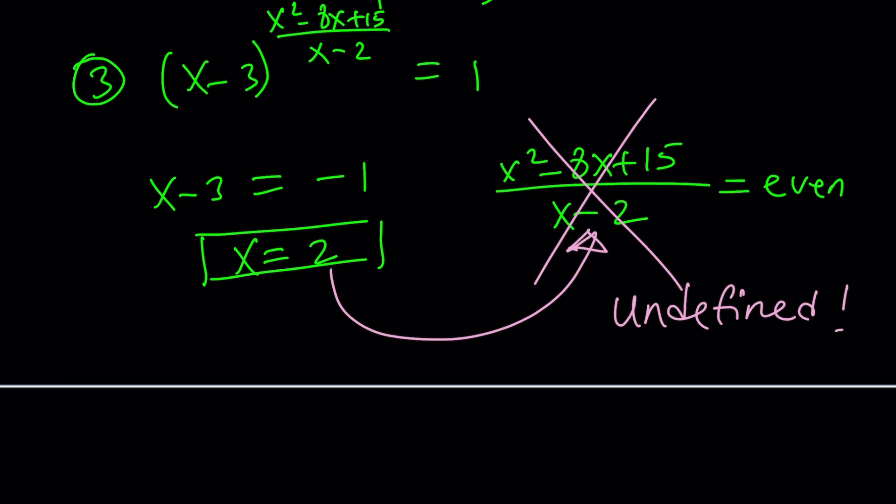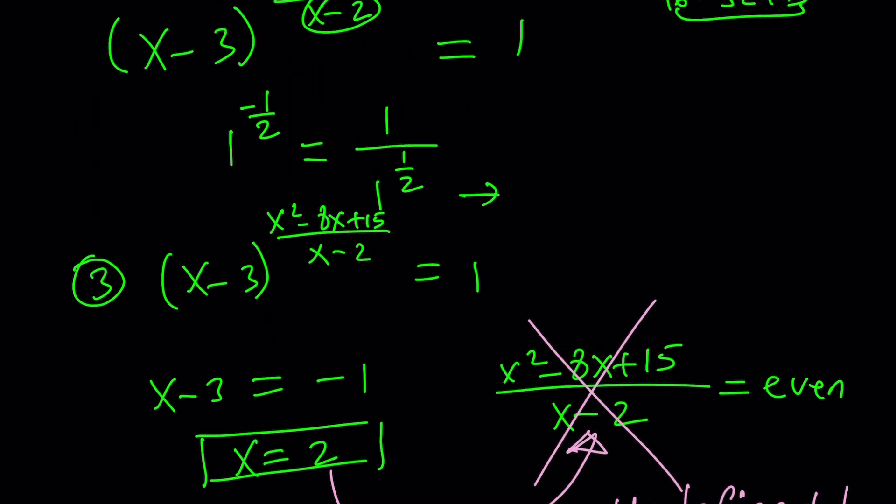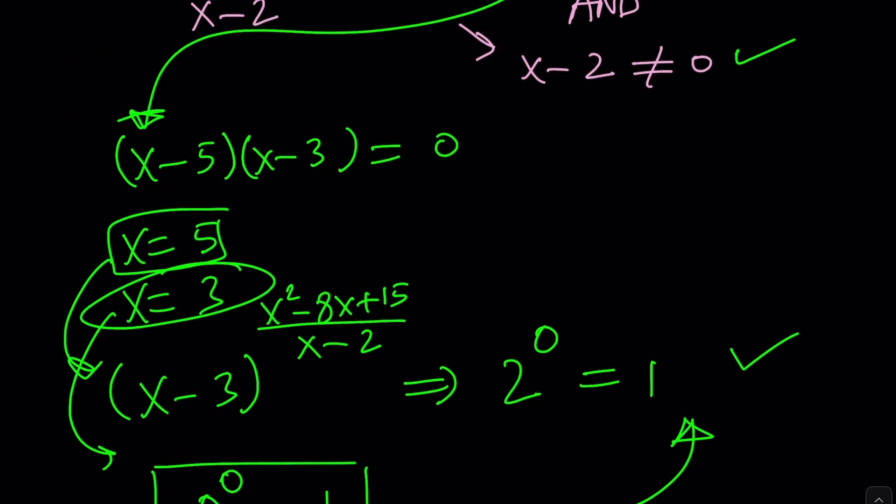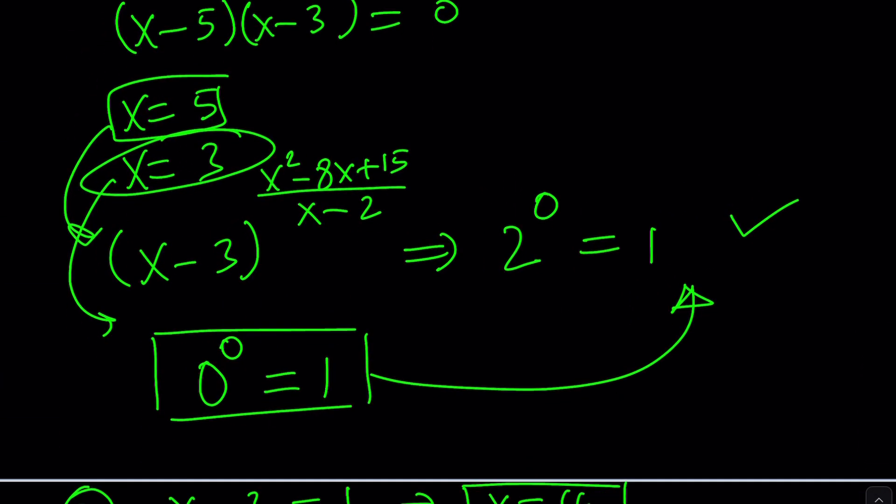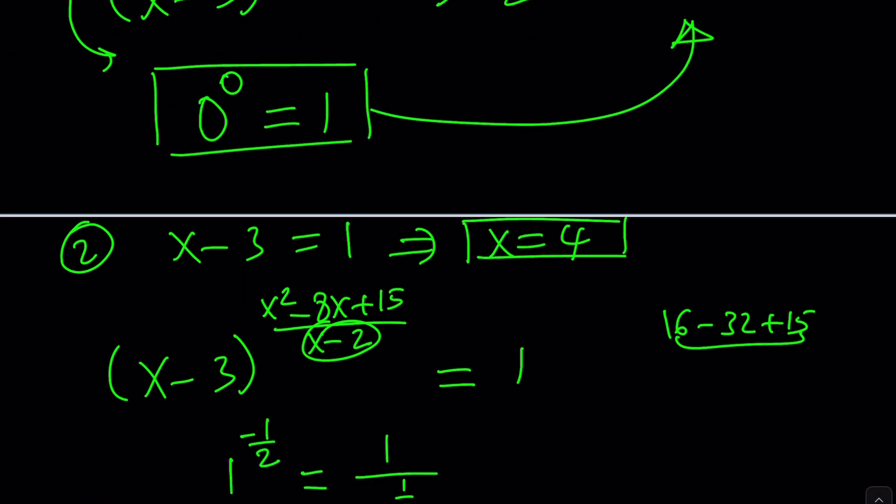Too bad x equals 2 is not a solution. It's not valid, even though it might, well, in some cases it works. But in this case, it just doesn't. So how many solutions we have? What are they? Let's go ahead and put it all together. So we got 3 and 5 from the first case, and we got 4 from here.